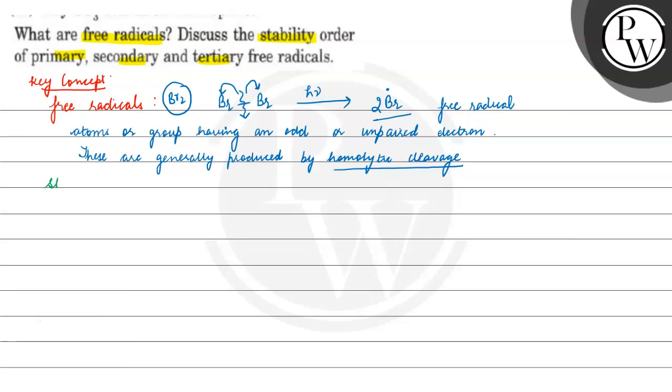So, let us now discuss the stability order. This is the tertiary free radical. This is secondary free radical. And this is the primary free radical.